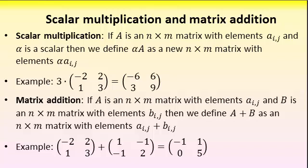So I begin by adding the elements at position 1,1, that's minus 2 plus 1, which is minus 1, and that will be the 1,1 element of the sum. Then I can add 2 minus 1, which is 1, 1 minus 1, which is 0, and 3 plus 2, which is 5.